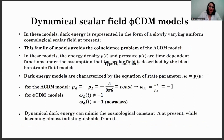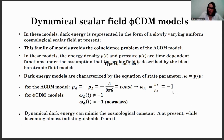The main alternative to the lambda CDM model are the dynamical scalar field phi CDM models. In these models, dark energy is represented in the form of a slowly varying uniform cosmological scalar field at present. This family of models avoids the coincidence problem of the lambda CDM model. In these models, the energy density and pressure are time-dependent functions under the assumption that the scalar field is described by the ideal barotropic fluid model. Dark energy models are characterized by the equation of state parameter, which is the ratio of the pressure to the energy density. For the lambda CDM model, the equation of state parameter is a constant equal to minus one, whereas for phi CDM models, the equation of state parameter is a time-dependent function.